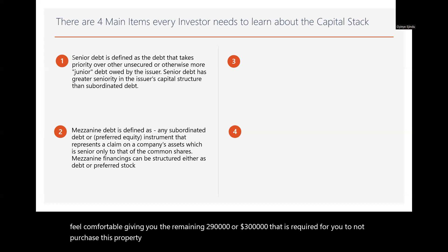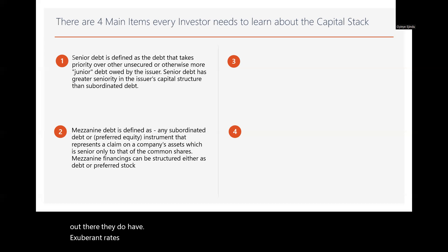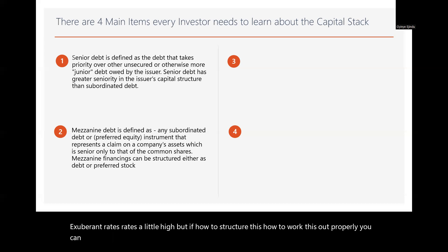When the mezzanine lender sees there is a lender willing to give you seven hundred thousand dollars, they may feel comfortable giving you the remaining two hundred ninety thousand or three hundred thousand required to purchase the property. Mezzanine financing is very risky and comes with higher rates, but if you know how to structure it properly, you can use senior debt and mezzanine debt together and purchase a property at 100% financing.